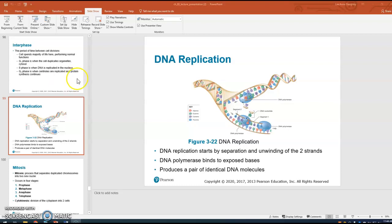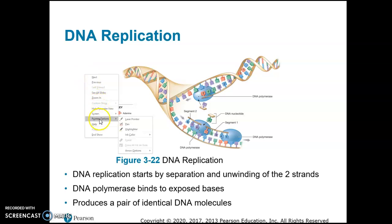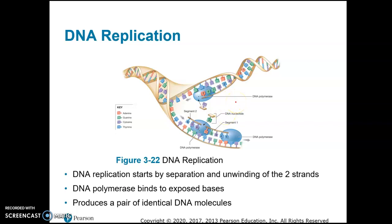This is part five of the chapter three lecture notes. We left off with DNA replication. DNA replication has to occur before mitosis or before the cell divides, because each new cell after the cell divides will need a copy of the DNA.